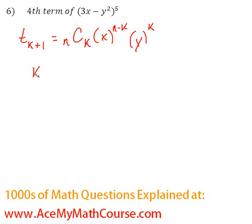Fourth term, which means that k plus 1 is 4, so k is 3. And we know that n choose k is equal to n factorial all over k factorial times n minus k factorial.